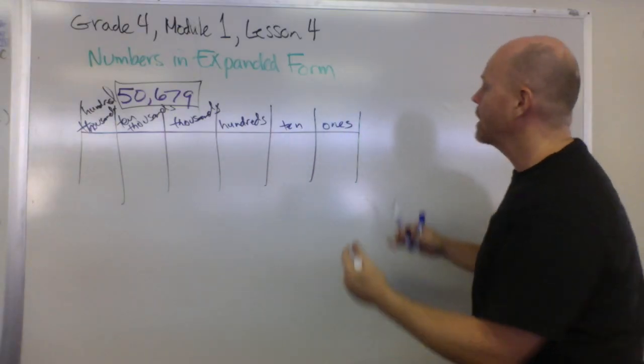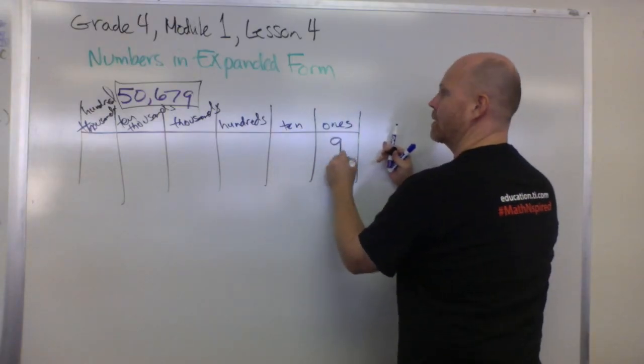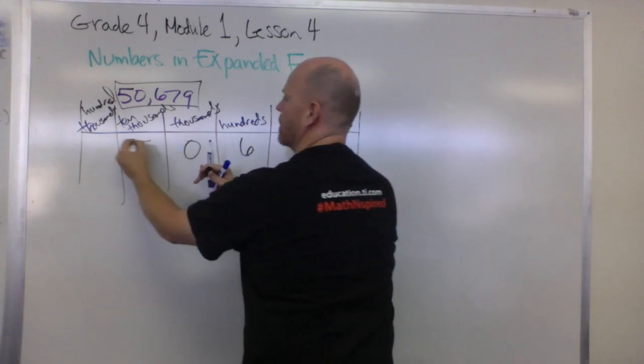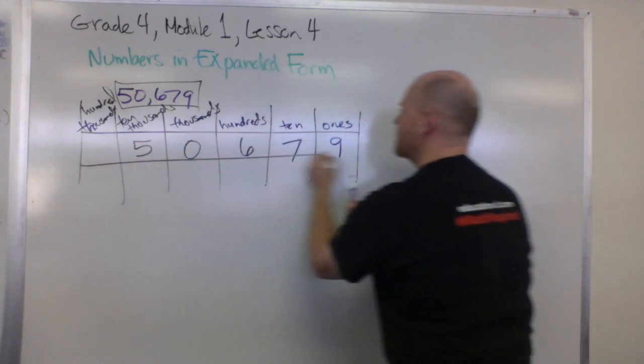So now what we're going to do is record this traditional standard notation number in our place value chart. The nine goes way back here. The seven goes here. The six goes here. The zero goes here. The five goes here. And what does this mean?